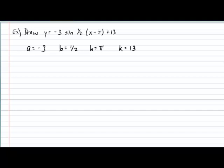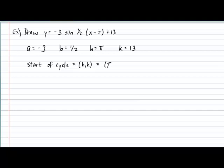First, let's identify the start of our cycle. That is given by the coordinate (h, k), and in this example our cycle will begin at the coordinate (pi, 13). Next, let's identify the amplitude. The amplitude is given by the absolute value of a, so it equals the absolute value of negative 3, which is 3.